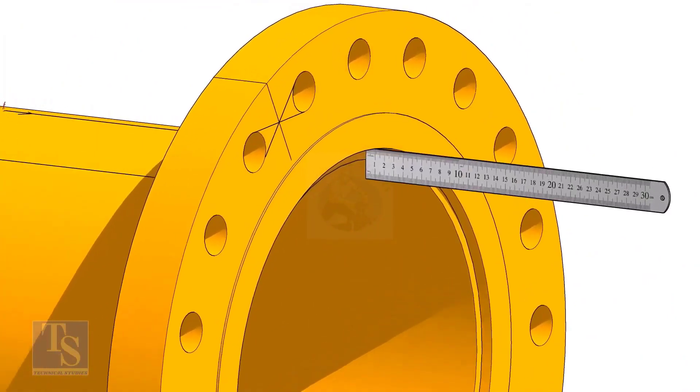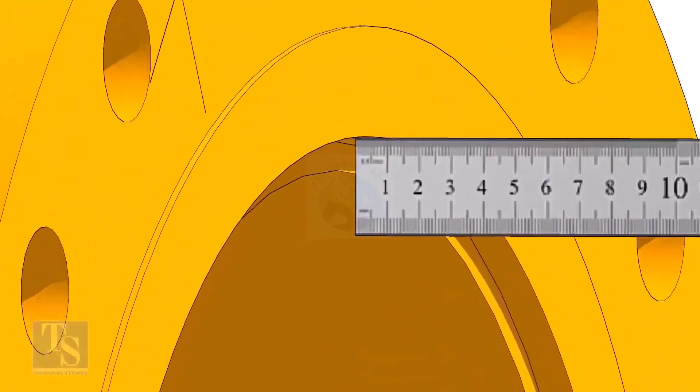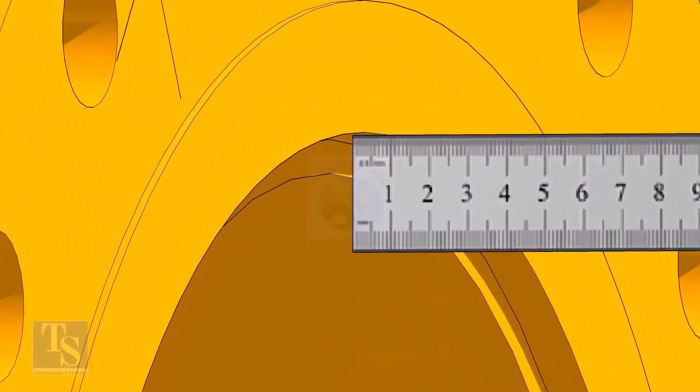Fix the distance between the flange face and the pipe face. Usually, this measurement is equal to the thickness of the pipe.